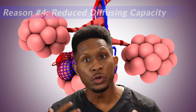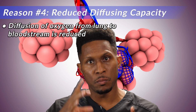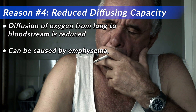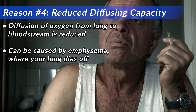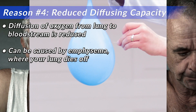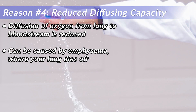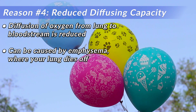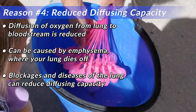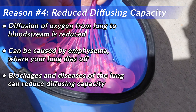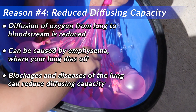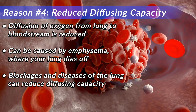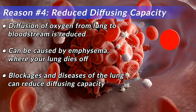Reason number four is a reduced diffusing capacity. That means your balloon either isn't there or it's popped, such as in emphysema, which is caused by smoking — your lung dies off, that balloon essentially pops and it's gone. So you have a reduction of your diffusing capacity. If you have four balloons and one pops, you've lost a quarter of your diffusing capacity. Or if your balloon is full of water or infection, oxygen has a tough time getting through. In the case of interstitial lung disease, autoimmune lung disease, or COVID — which I take care of — those balloons are full of white blood cells, and oxygen has a tough time getting through into your bloodstream. That's a reduction of diffusing capacity.